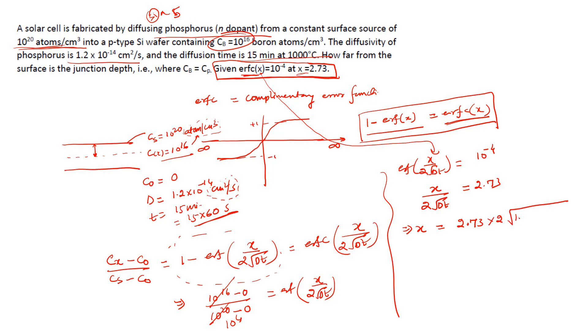Just multiply D. D = 1.2 × 10⁻¹⁴ × time 15 × 60. Do it by calculator. 2.73 × 2 × √(1.2 × 10⁻¹⁴ × 15 × 60). This is 1.794 × 10⁻⁵ and this will be unit of cm, because 1.2 × 10⁻¹⁴ cm² per second and time in seconds, so if you take root of cm² it will be cm.